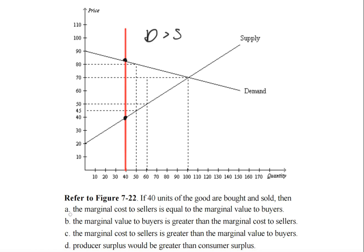Let's see what our answer choices are. Answer A: the marginal cost to sellers is equal to the marginal value to buyers. This is incorrect because that is not the case. The only time that is true is at the equilibrium point, but we're not at equilibrium.